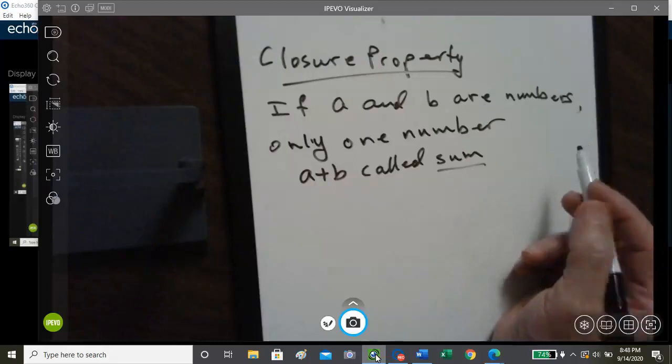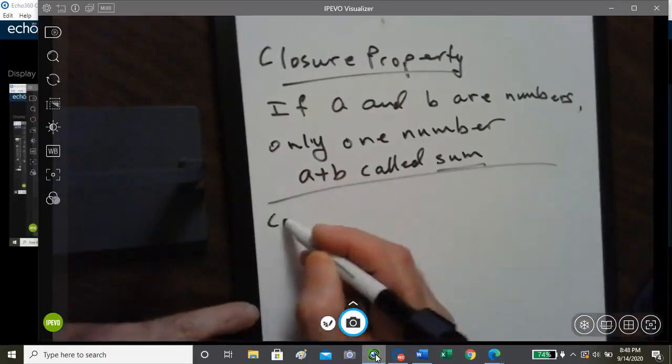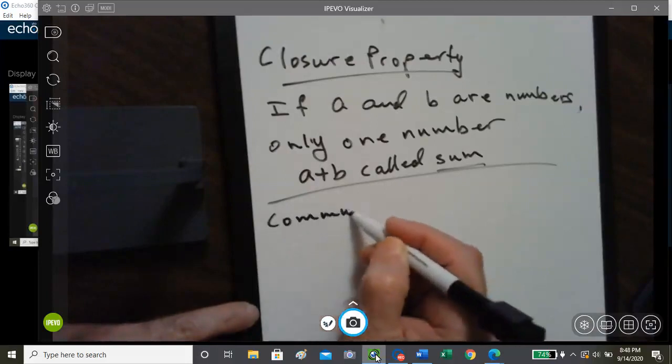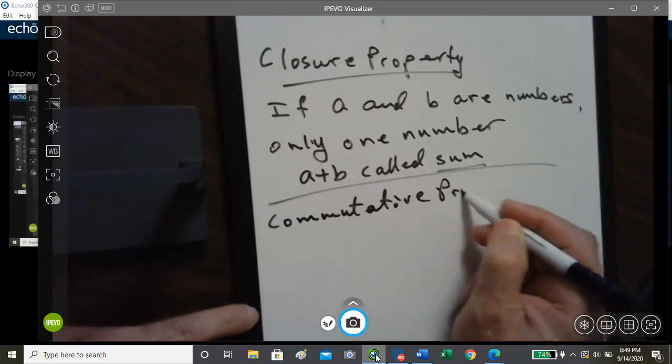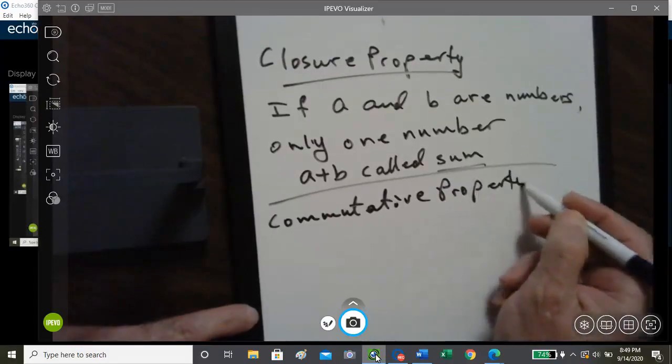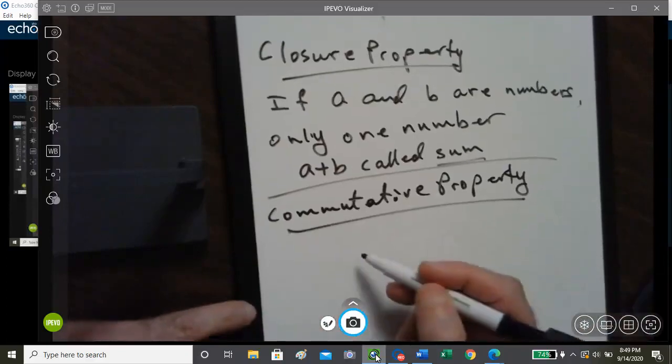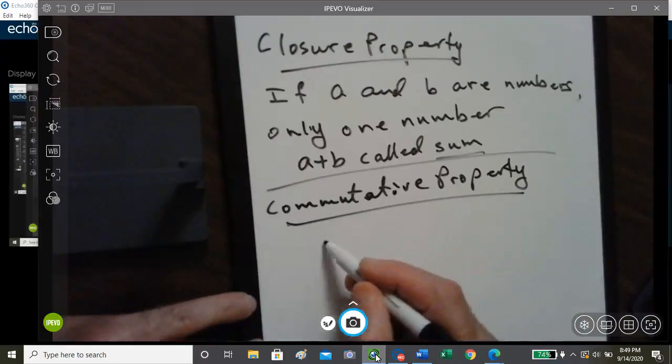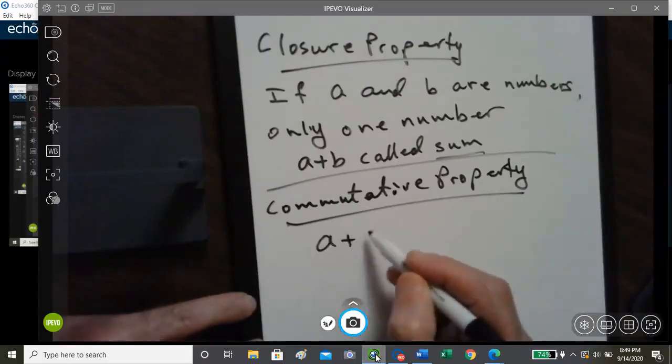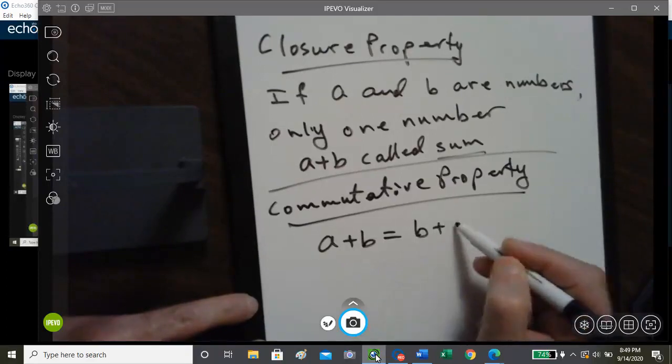The commutative property of Addition, that's where we have two numbers such as A plus B is equal to B plus A.